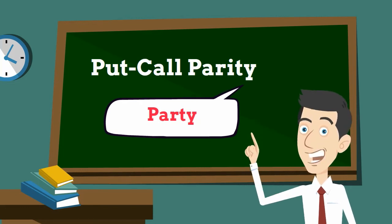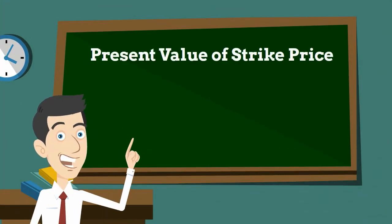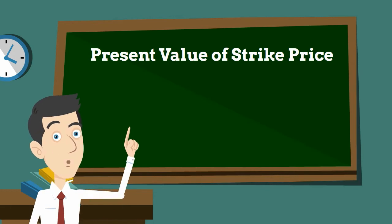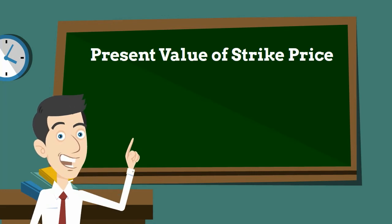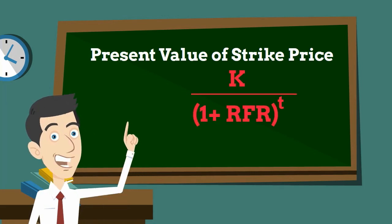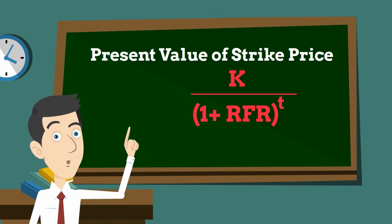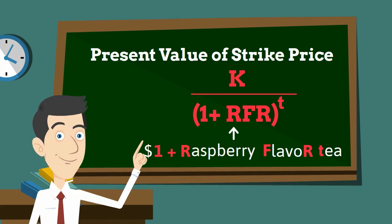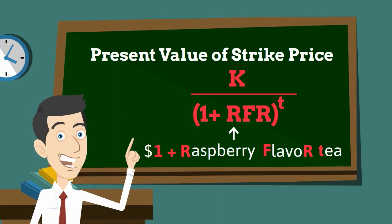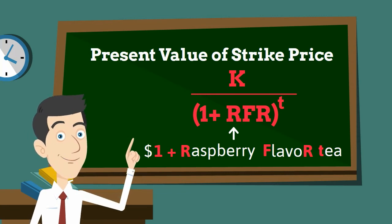But that's not all of the formula, because you still need to account for the present value of the strike price. No worries — we have got this covered. The PV formula is K divided by (1 plus the risk-free rate, RFR) to the power t. So picture the woman paying $1 so she can get another drink, which is a raspberry flavored tea — giving you RFR to the power t.